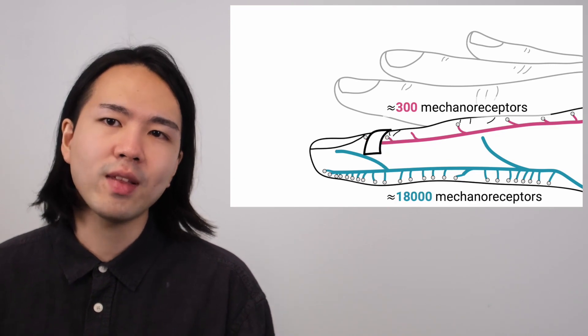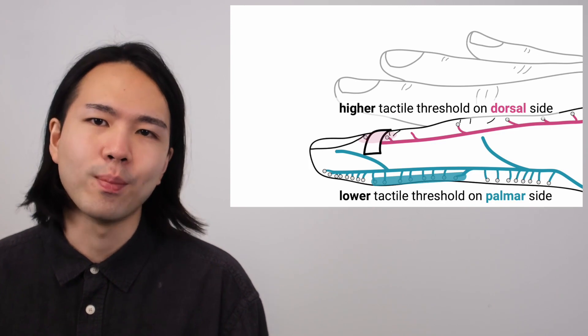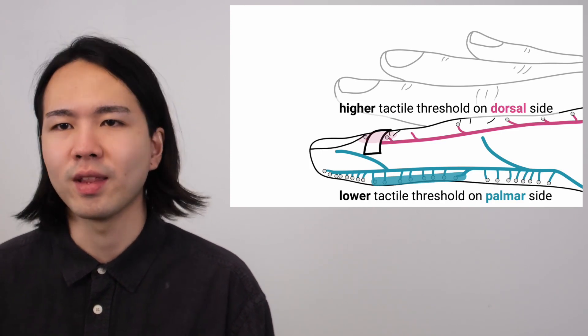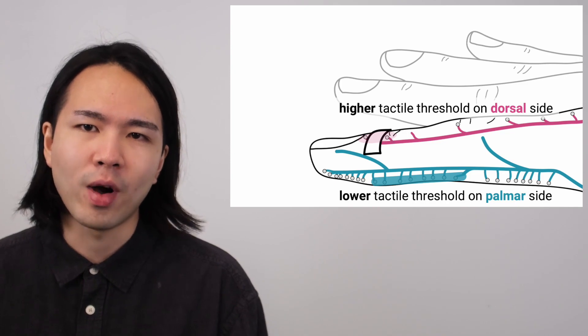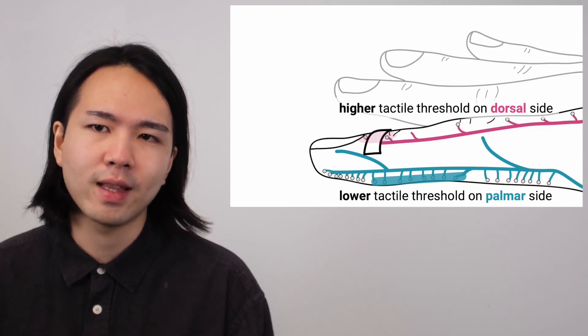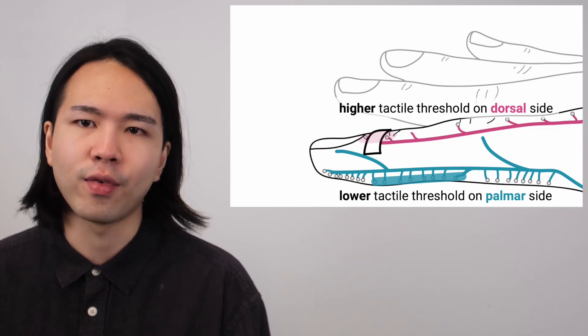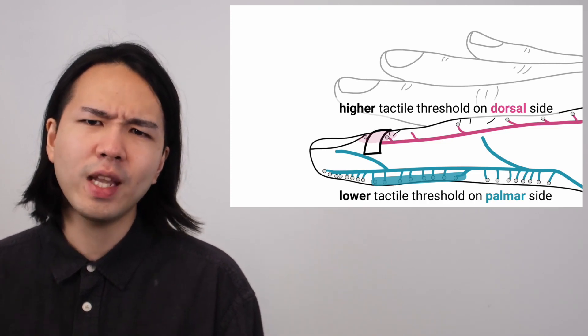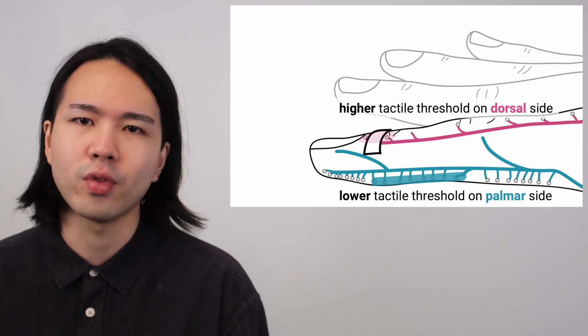We have 60 times more receptors on the front than the back, making the front side much more sensitive to electrical currents. This means if I increase the current in small amounts, the first side that will feel a tactile sensation is the front side, because it has more receptors and a lower sensitivity threshold. This is our approach.